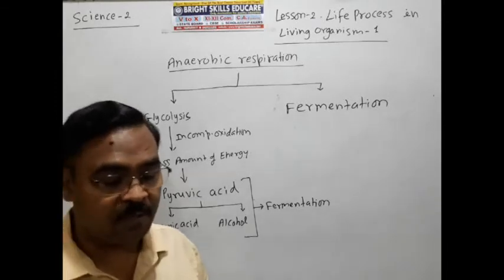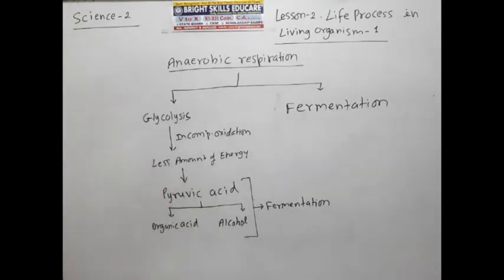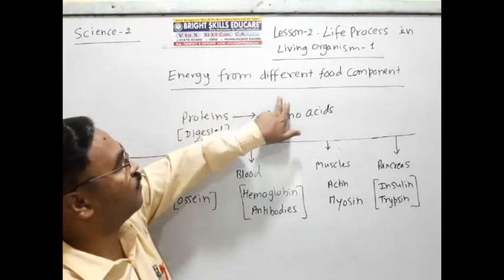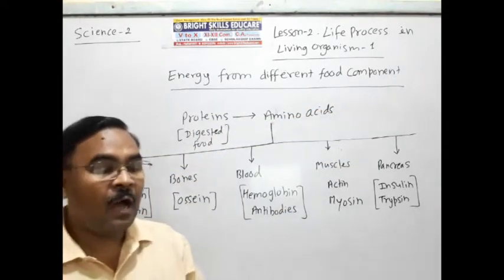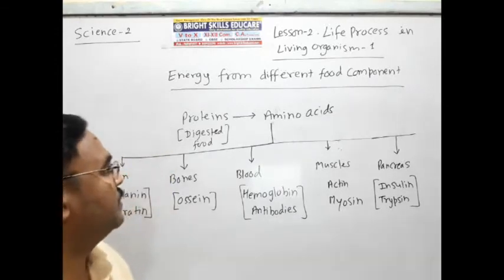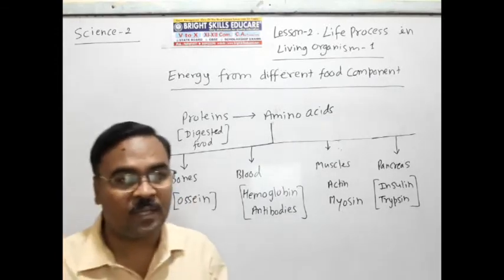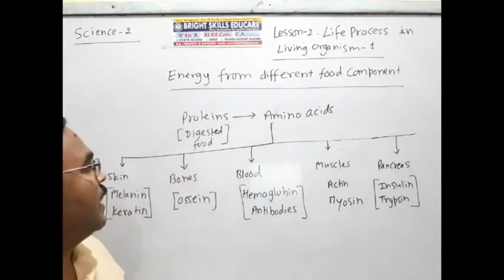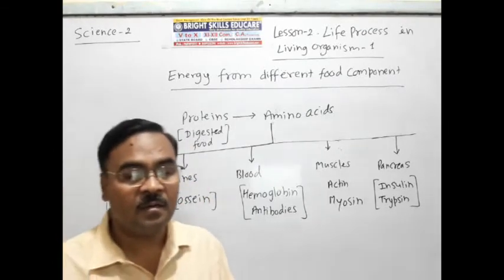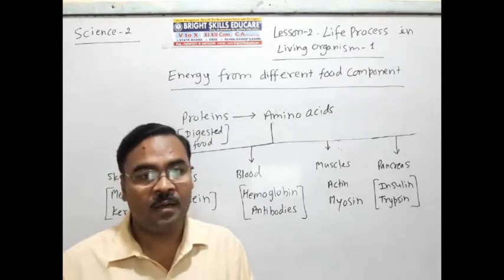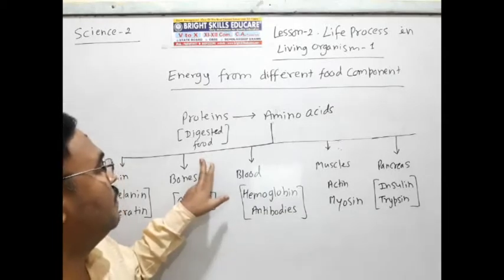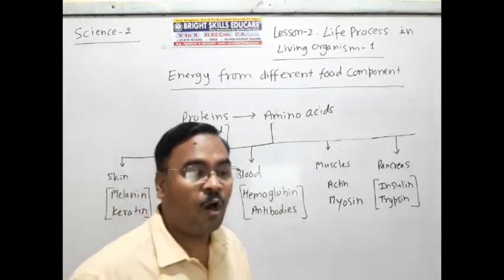Now let us proceed further. We will see energy from different food components — we have a lot of food components. First of all, we have seen glucose. The protein we get from our digested food is absorbed by the bloodstream from the small intestine, and this digested protein is converted into amino acids.